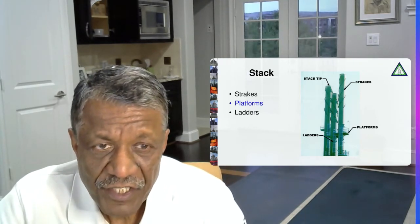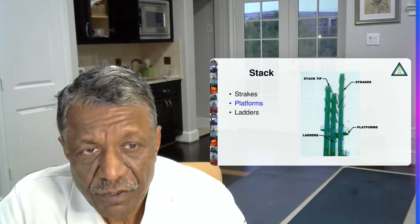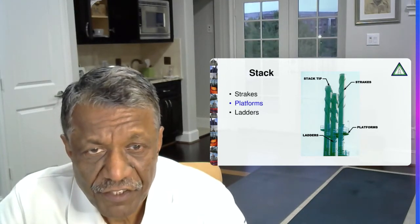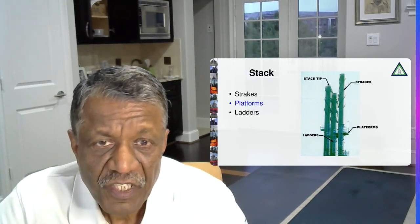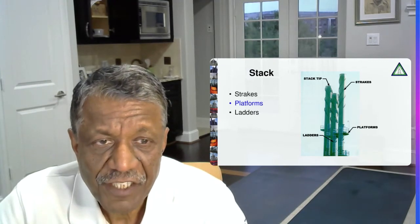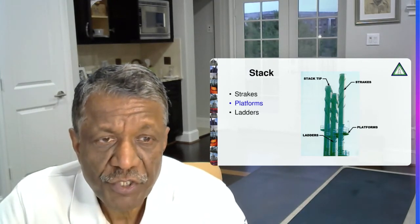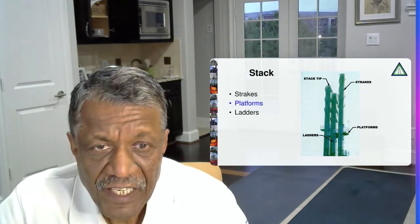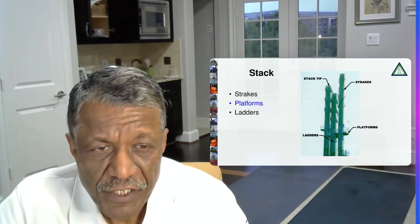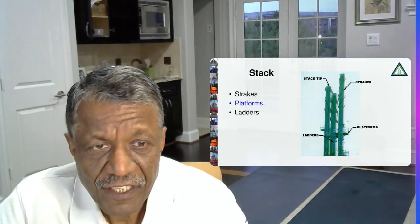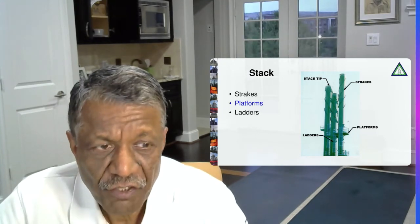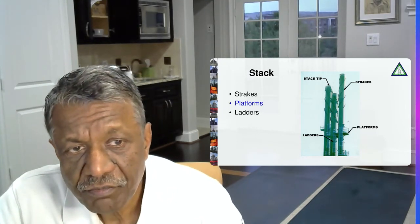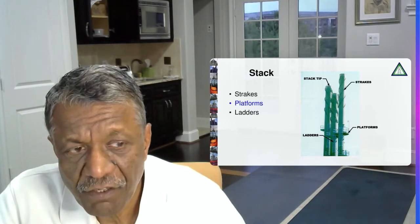Stacks are generally provided with strakes to break the wind velocities, high wind velocities. They are also provided with ladders and platforms because for pollution monitoring purposes, nozzles are provided at high elevations to monitor the NOx content and CO content and oxygen content. So these ladders and platforms are provided.